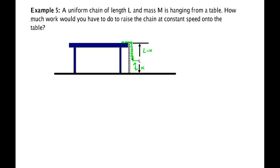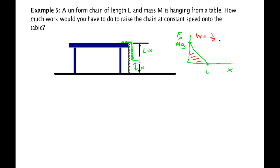All of the work goes into increasing gravitational potential energy since you're moving at constant speed and net work is zero. You're doing work and gravity's doing work, so you're doing the negative of gravity's work. One way to solve this non-constant force problem is to graph force versus distance. Initially you're lifting the full weight MG, and at distance L you're lifting none of it. The graph is a straight line, so the work equals the area, which is one half times MG times L, giving MGL over 2.